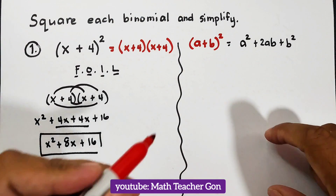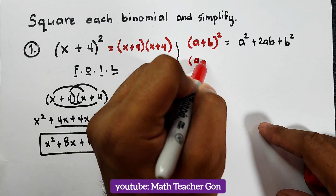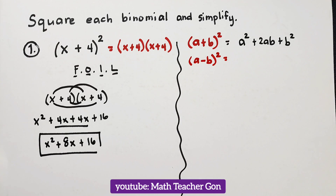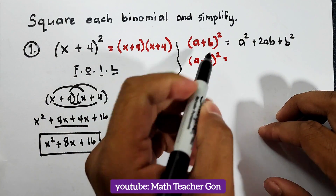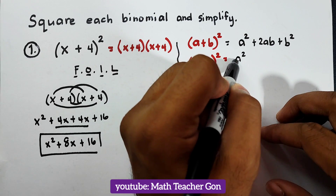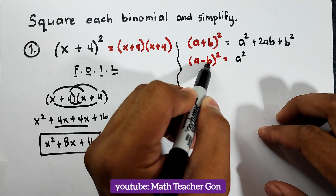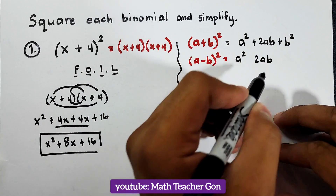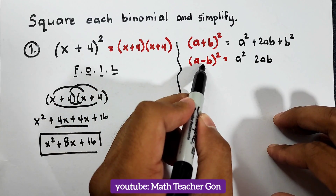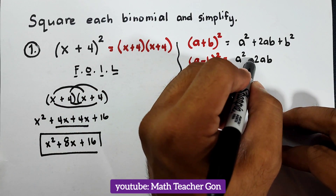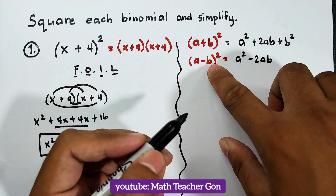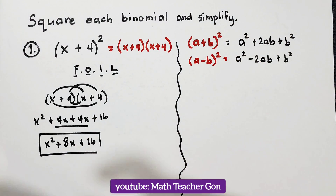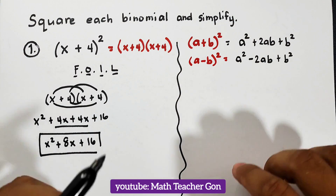Another possible case is when the middle sign is negative — like a minus b squared. To expand using the square of binomial pattern: same steps — square the first term to get a squared; multiply the two terms a times b is ab, times 2 gives 2ab; copy the negative sign so we have minus 2ab; lastly square the last term to get plus b squared.